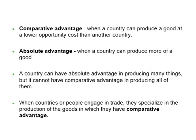When countries engage in trade, they specialize in the production of the goods in which they have comparative advantage and trade part of that production for goods in which they do not have comparative advantage. With trade, manufacturers produce goods where the opportunity cost is lowest, so total production increases, benefiting both trading parties.